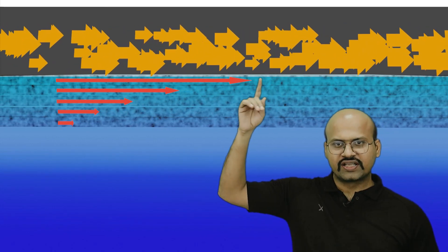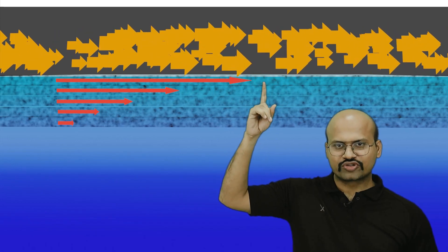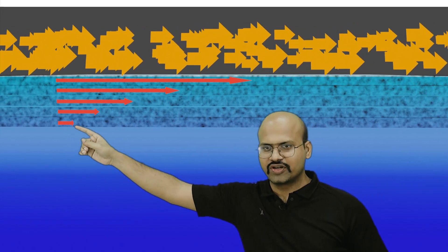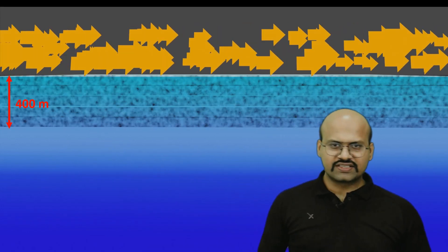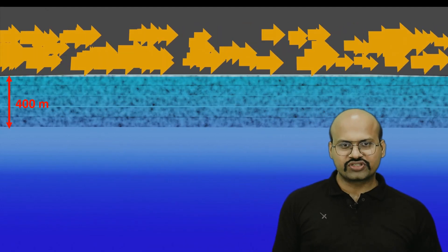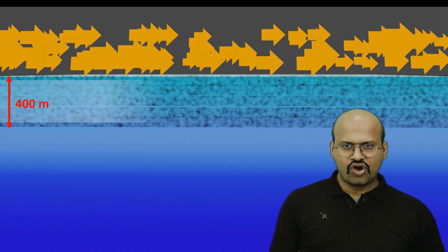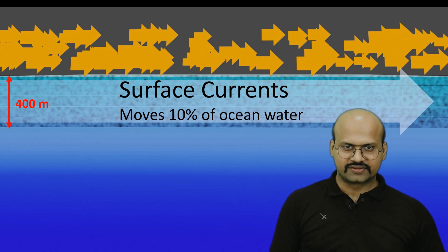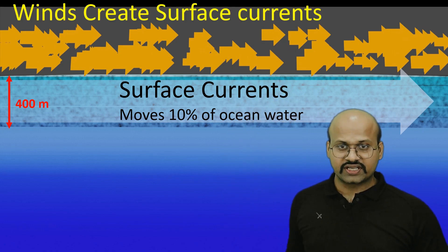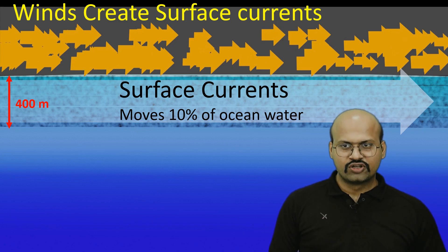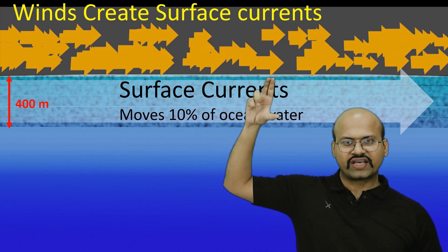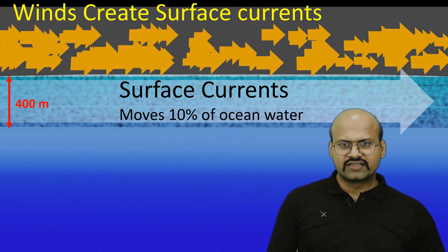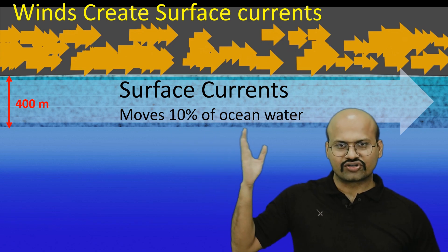The velocity profile shows the highest velocity at the topmost layer, with velocity decreasing until it reaches zero at depth. Wind causes motion in ocean water only in the topmost layers — generally up to around 300 to 400 meters depth. The rest of the water is not affected by wind. The region where the wind is able to move the water is called the surface current, and surface currents move only 10% of the ocean water.